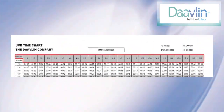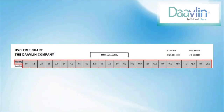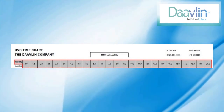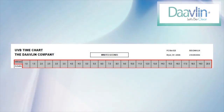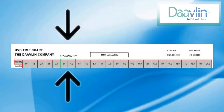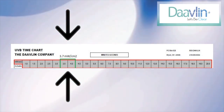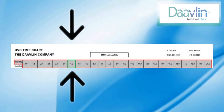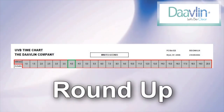First, look at the top row of the UVB time chart. This is where you will locate your unit's power output. In our example, the output is 3.7, so we need to find the interval in which 3.7 falls. According to this chart, 3.7 falls between 3.5 and 4. In this example, we will round up to 4. It is important to note that if your power output falls between two numbers, you will always round up.